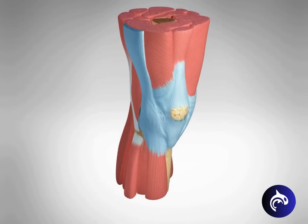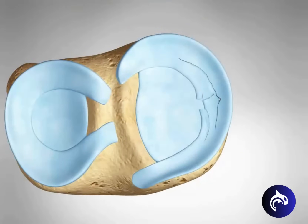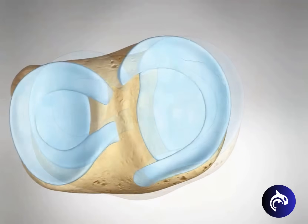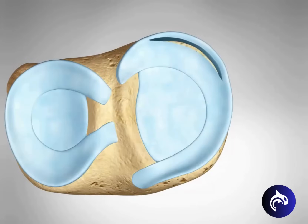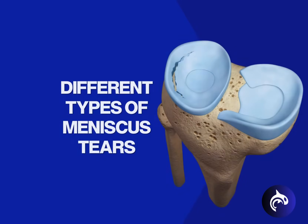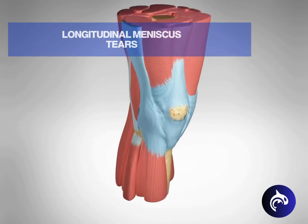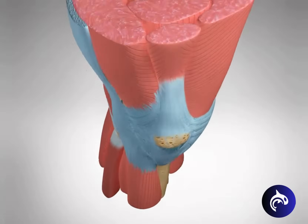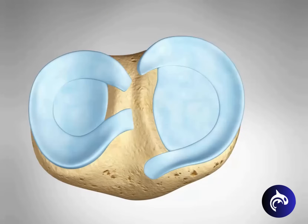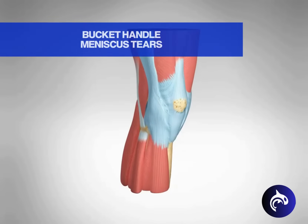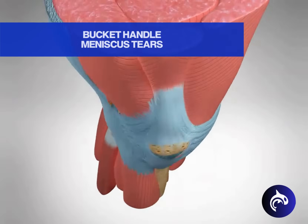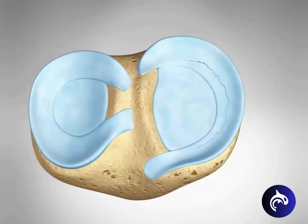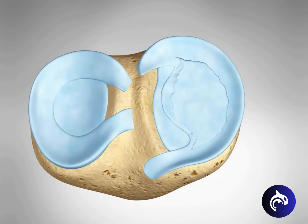The meniscus can tear in many ways and locations, and recommended treatment will depend on size, depth, and location. Longitudinal tears run parallel to the fibers of the meniscus and typically occur in younger and more physically active individuals from repeated motions. Complete longitudinal tears can result in a bucket-handle tear, which can flip or fold into the joint, causing locking of the knee.